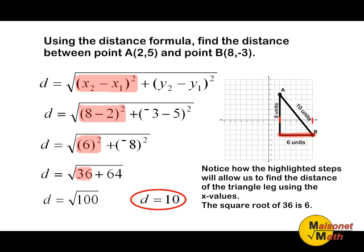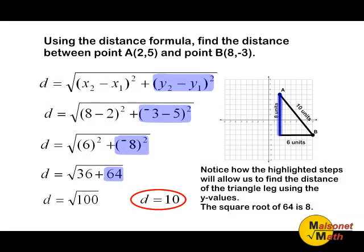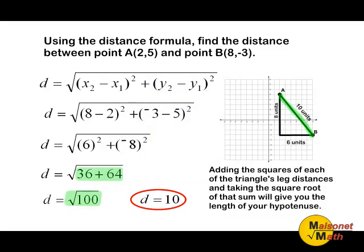Looking back at our work, we can see that everything highlighted will allow us to find the distance of one triangle leg using the x values. If we take the square root of 36, that is 6, which is the distance of one of our triangle's legs. All of the steps using the y values allow us to find the distance of the other triangle leg. The square root of 64 is 8, which gives us the distance of the other triangle leg. By adding the squares of each of the triangle's leg distances and taking the square root of that sum, that gives you the length of the hypotenuse, which is also the distance between our two given points — in this case, 10 units.